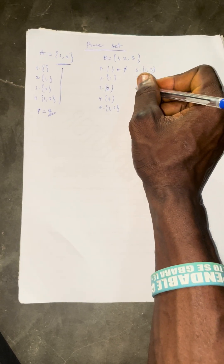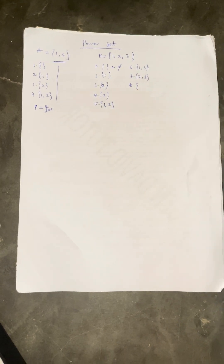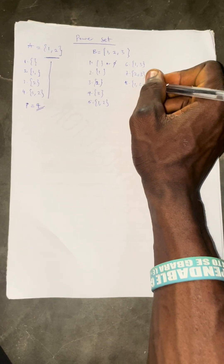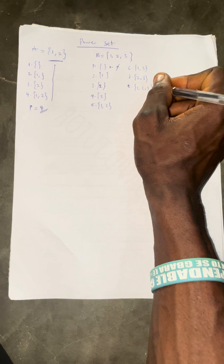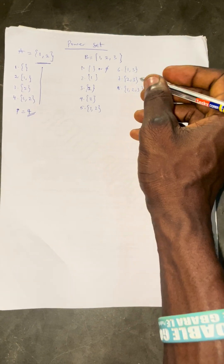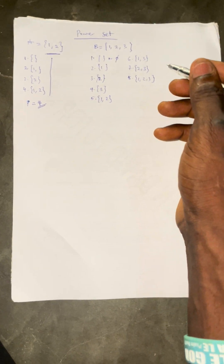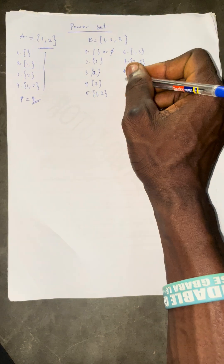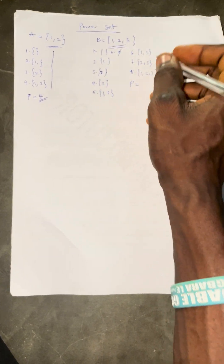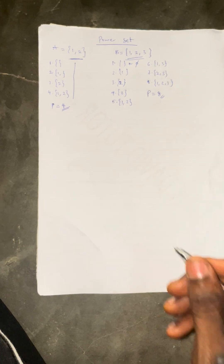Then number 8, you have {1, 2, 3}. That means the total number of subsets here is 8. So the power set of this particular question equals 8.